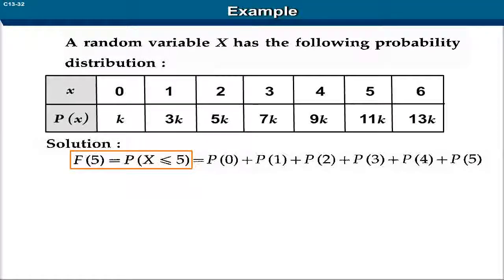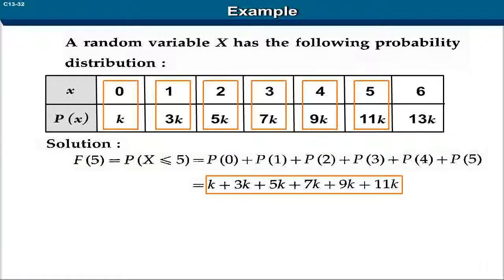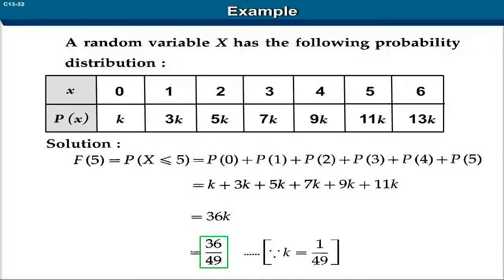F(5) is equal to P(X ≤ 5) is equal to P(0) plus P(1) plus P(2) plus P(3) plus P(4) plus P(5), which is equal to k plus 3k plus 5k plus 7k plus 9k plus 11k, equal to 36k, which is equal to 36 upon 49.